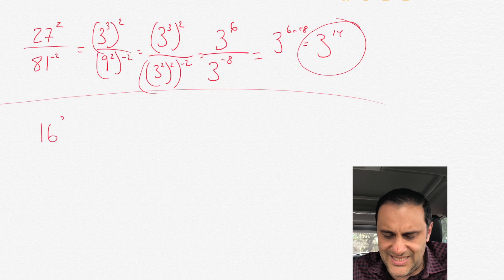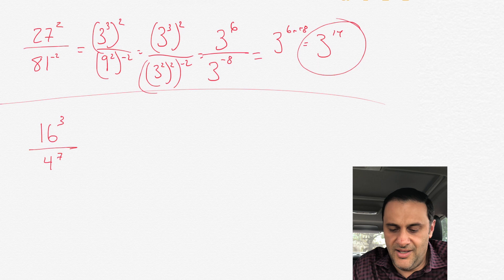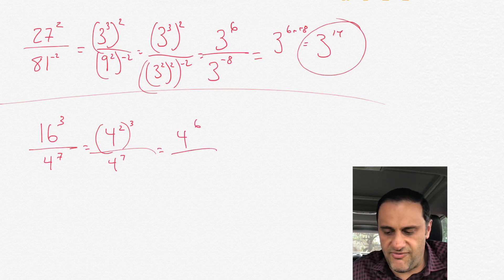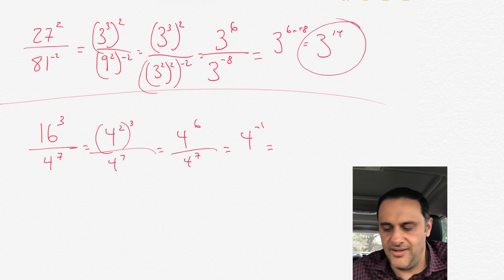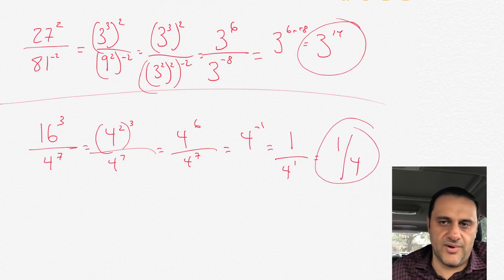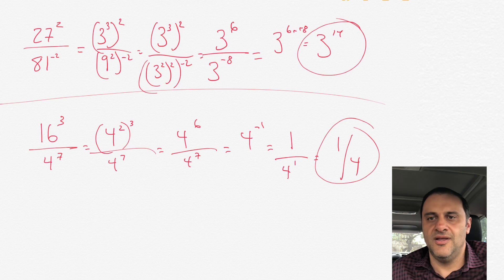Try this one on your own: 16 cubed over 4 to the 7. Give it a shot, pause if you want, and we're going to do it together right now. All right — 16 is like 4 squared, so 16 cubed is like 4 squared to the 3 power, and on the bottom we have 4 to the 7. For 4 to the 2 to the 3, you multiply 2 and 3 to get 6, so you get 4 to the 6 over 4 to the 7. Then 6 minus 7 is negative 1, so that equals 4 to the negative 1. Now 4 to the negative 1 is just like 1 over 4 to the 1, and 4 to the 1 is 4, so the answer is 1 fourth. If you got 1 fourth, then you rock and roll.